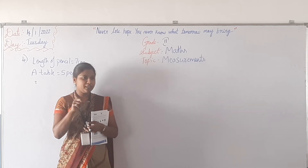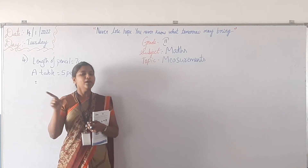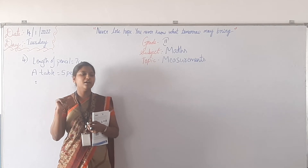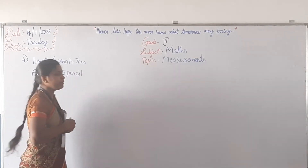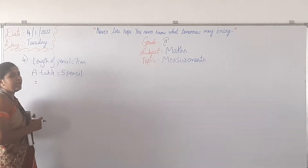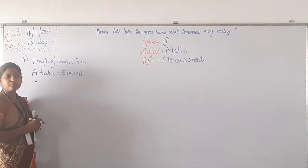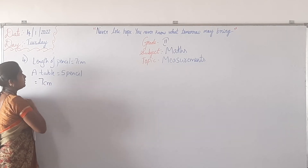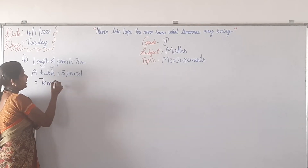You are using your pencil to measure the table. When you keep the pencil 5 times, you get the exact measurement of the table. So you have to repeat the addition. 7 cm — how many times? 5 times.